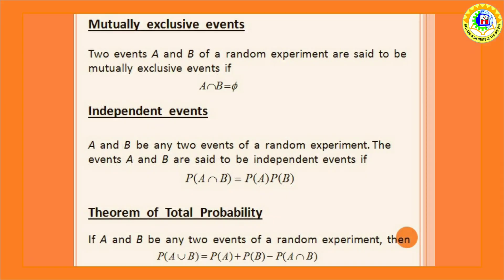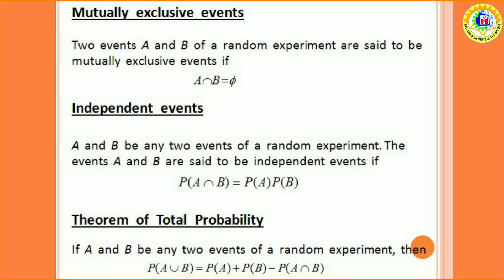Next, theorem of total probability. If A and B be any two events of a random experiment, then the theorem of total probability states that probability of A union B equal to probability of A plus probability of B minus probability of A intersection B.